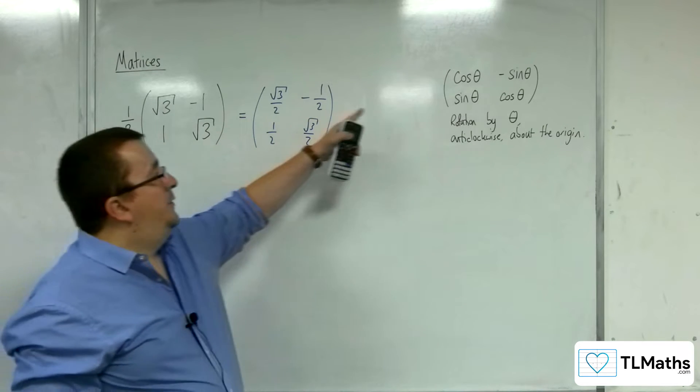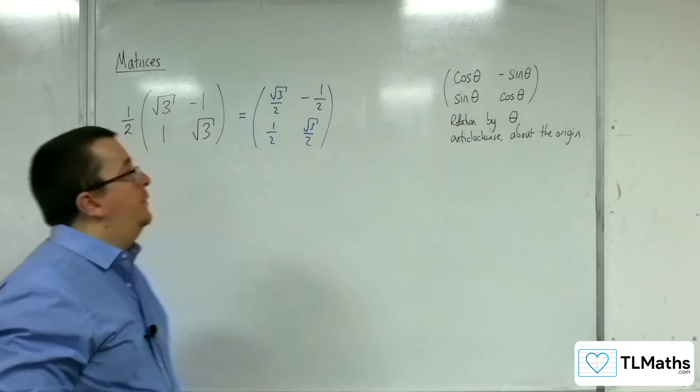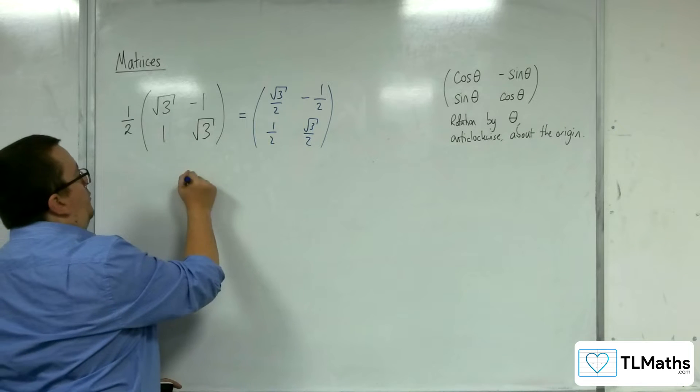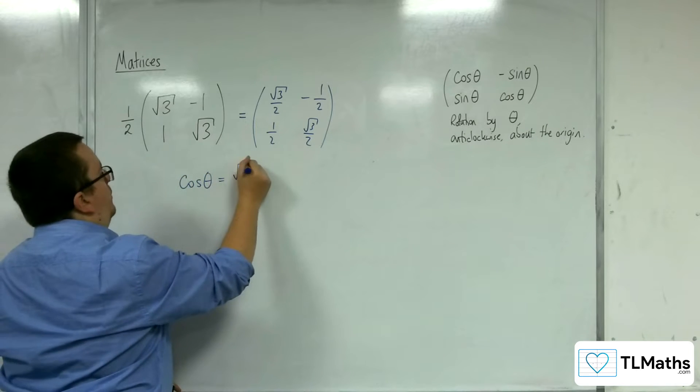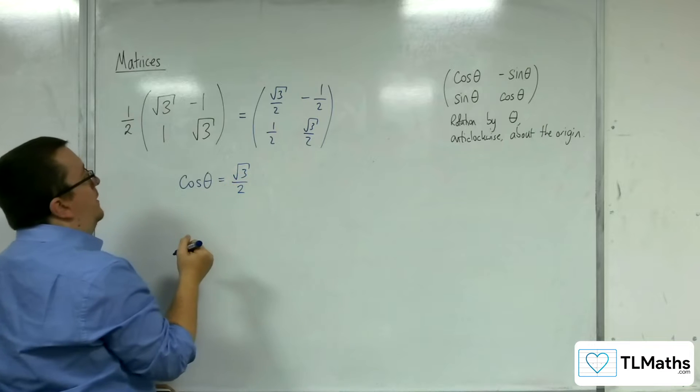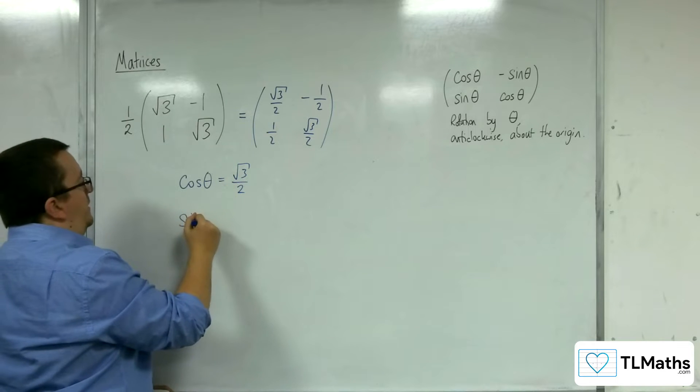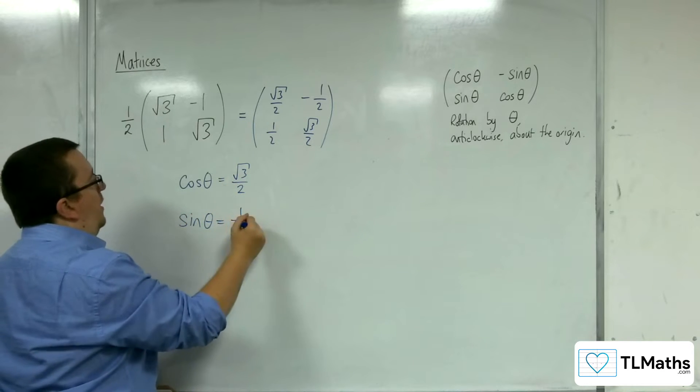Now, each of these elements must correspond with one of those. So we're being told that cosine of the angle is root 3 over 2, and sine of the angle is equal to 1 half.